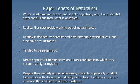What are the major tenets of naturalism? The writer must examine people and society objectively and, like a scientist, draw conclusions from what is observed. They also take in the ideal of reality — the inescapable working out of natural forces around you. Destiny is decided by your heredity and environment, by your physical drives and by your economic circumstances. Naturalism tends to be pessimistic because you can't quite control your environment or economic circumstances. It is the direct opposite of Romanticism and transcendentalism, which saw nature as mystical, holy, and close to God. Despite their underlying powerlessness, characters generally conduct themselves with strength and dignity in the face of adversity, thereby affirming the significance of their existence.